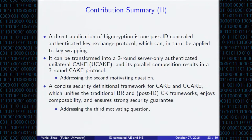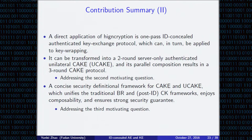A direct application of HICE is a one-pass identity-concealed AKE protocol, which can in turn be applied to key wrapping, and then transformed into a two-round server-only unilateral authenticated key exchange — a new AKE for short. Its parallel composition gives a three-round mutual AKE protocol with mutual ID privacy. This addresses the second motivating question. We also give a concise security definition framework for AKE and the new scheme, which unifies the BR and CK frameworks, enjoys composability, and provides strong security guarantees, addressing the third motivating question.